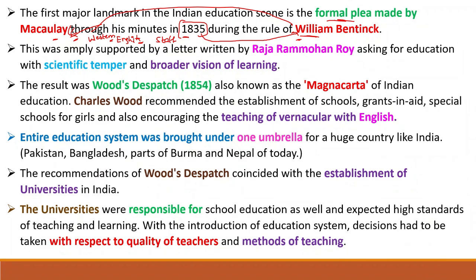Not only the British, but even Indian social reformer Raja Ram Mohan Roy wrote a letter to the English king requesting the introduction of an English education system in India — for the purpose of developing scientific temper and a broader vision of learning. Raja Ram Mohan Roy's intention was that Indians should develop scientifically and mathematically. Indian people were studying only religious traditional texts, and with those books alone, they could not move forward or develop the nation.